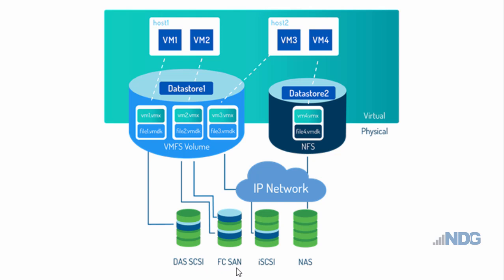Host1 also has fiber channel SAN storage, which is directly attached and being used by VM2 in Datastore1. The fiber channel SAN is a good solution but an expensive one, because it requires special host bus adapter cards and fiber connections to the drives.